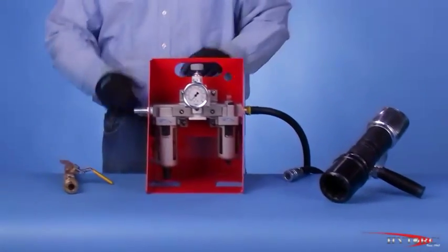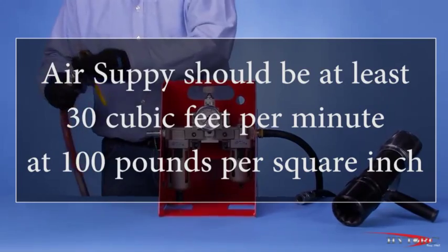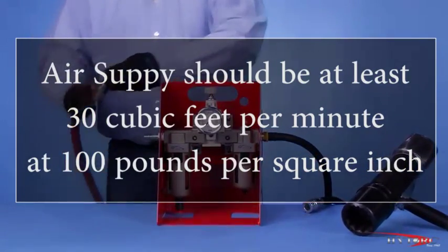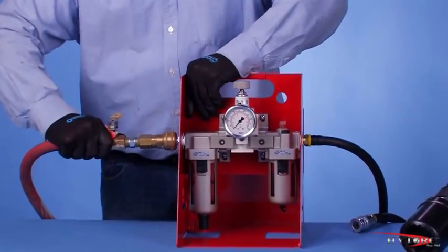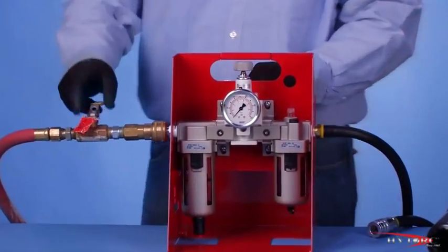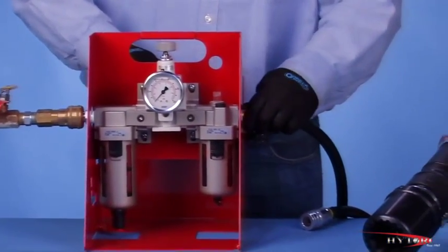For optimum performance, the Z-Gun needs a clean, dry air supply of at least 30 cubic feet per minute at 100 pounds per square inch. The supply hose should be connected to the input side of the pressure regulator assembly with any connector compatible with your air system.